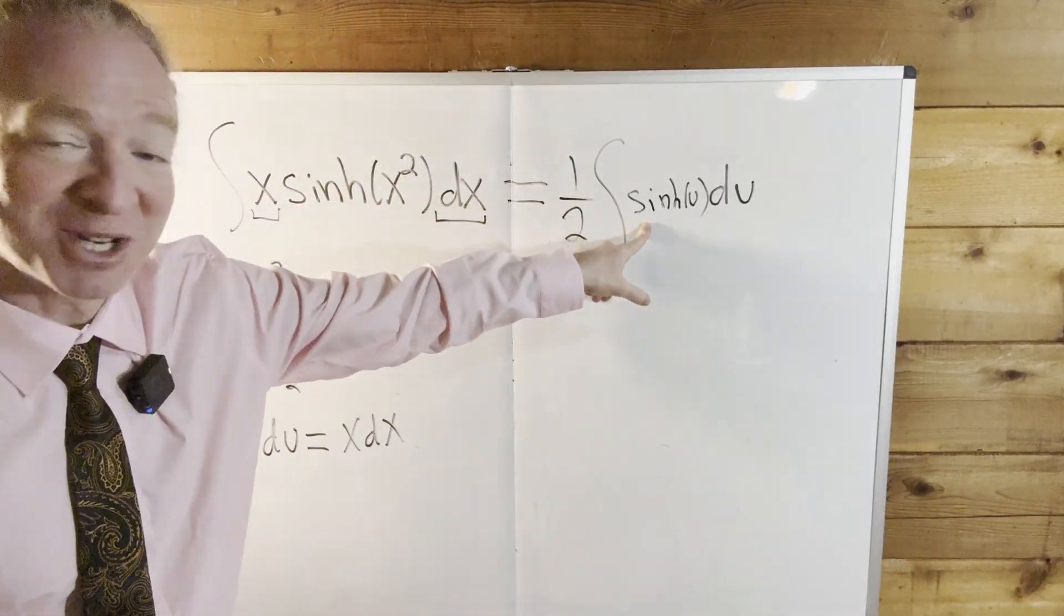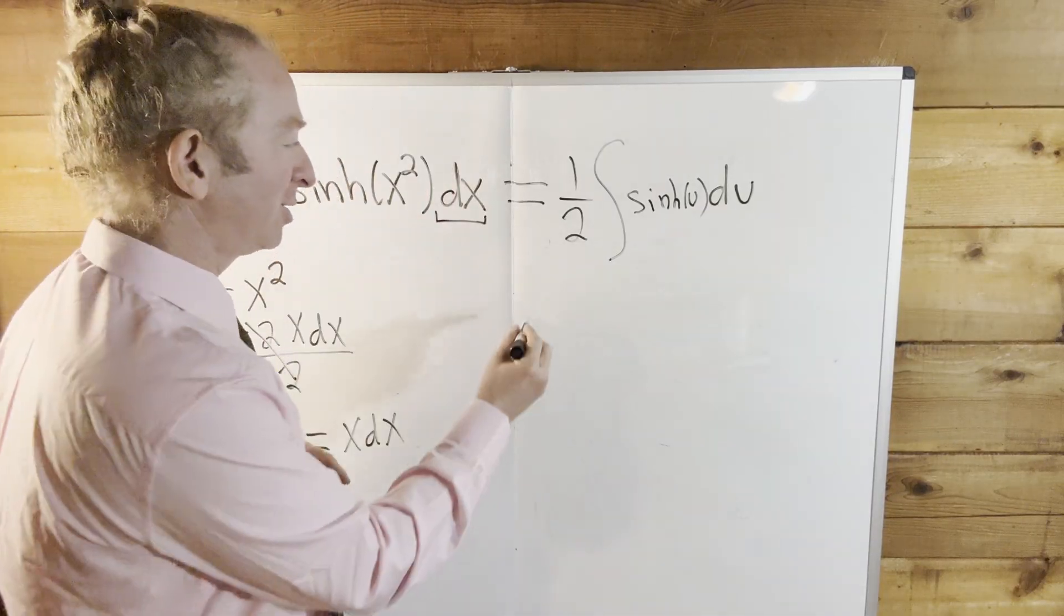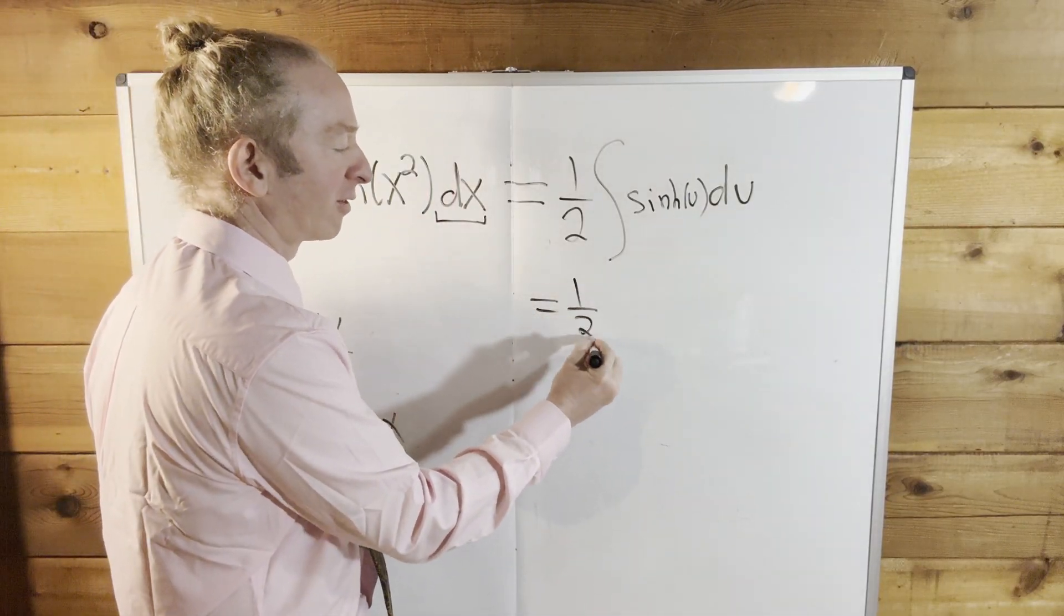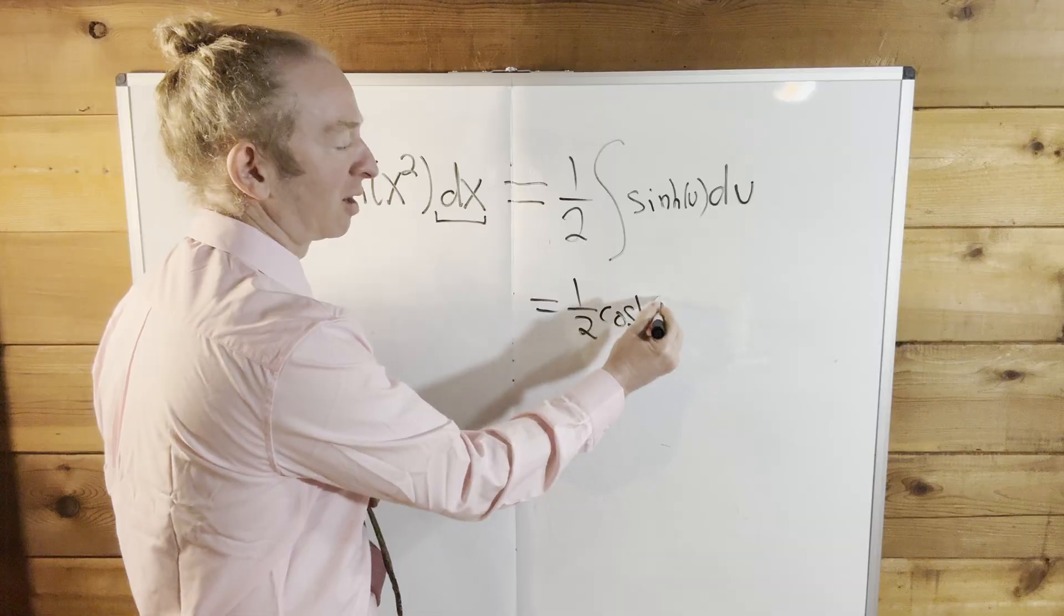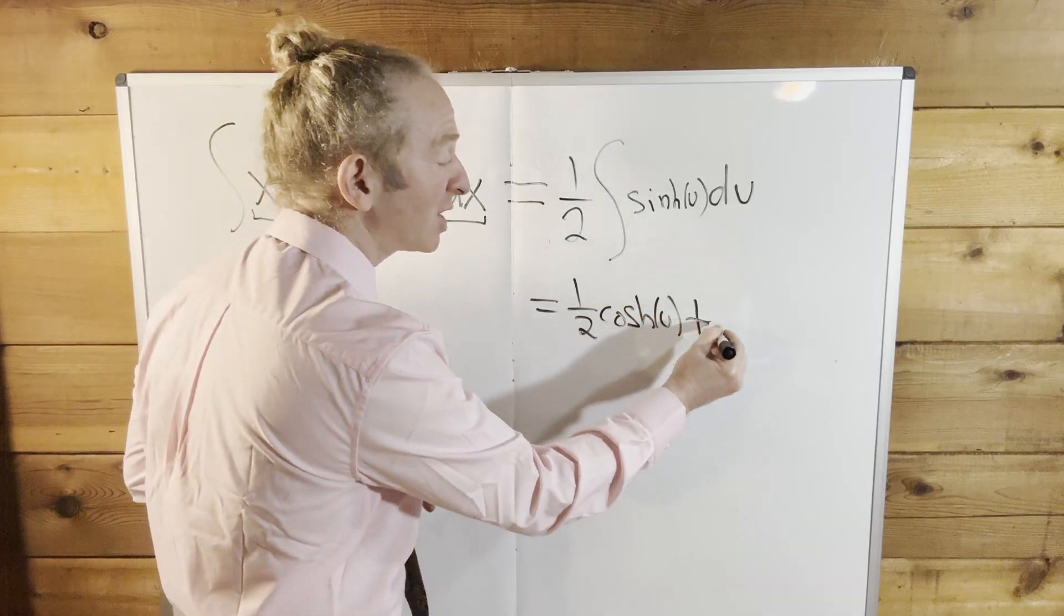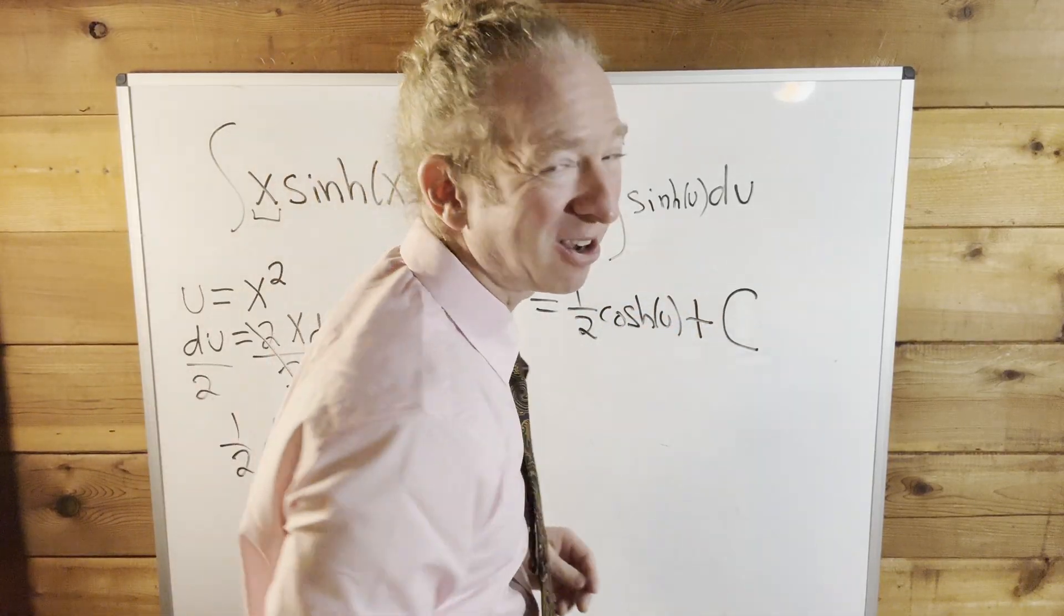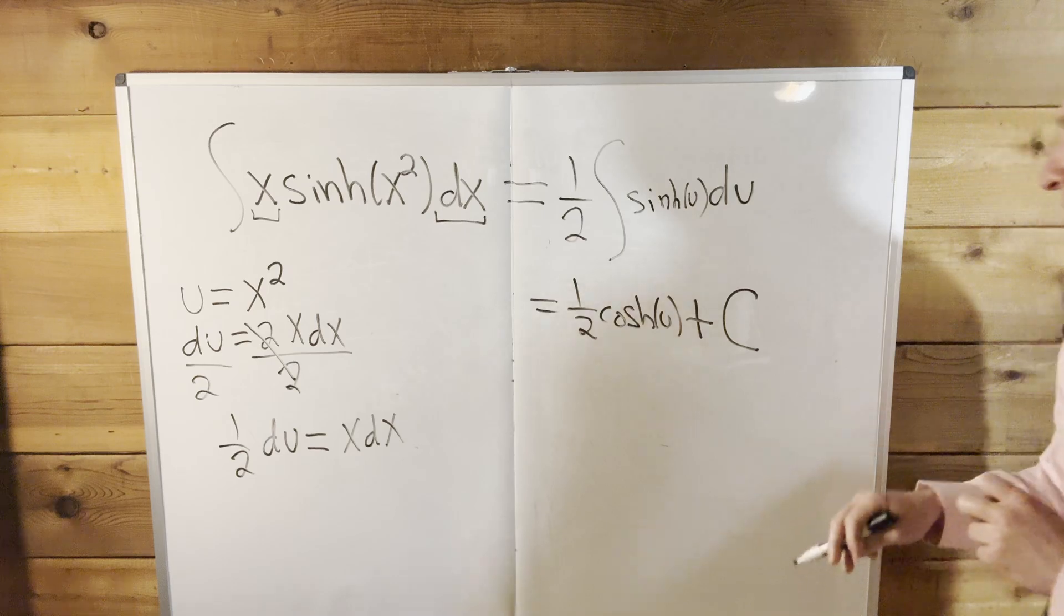So when you integrate sinh, you just get cosh. So this is equal to 1/2 cosh of u plus our arbitrary constant of integration, capital C.